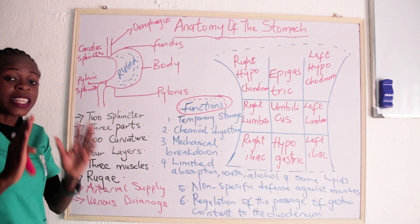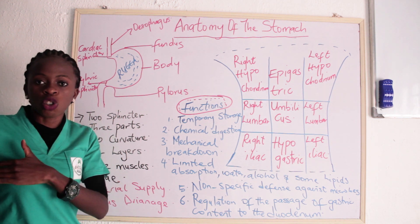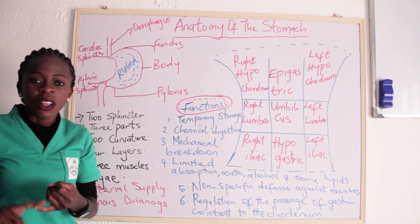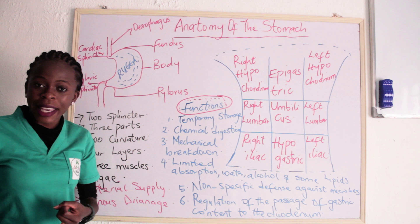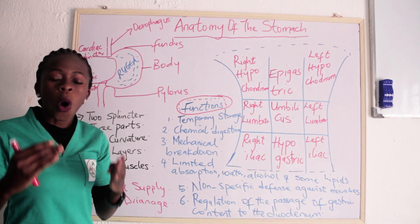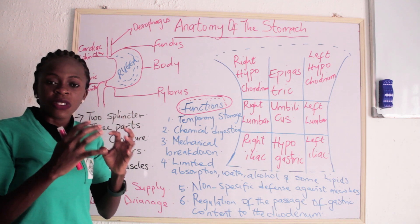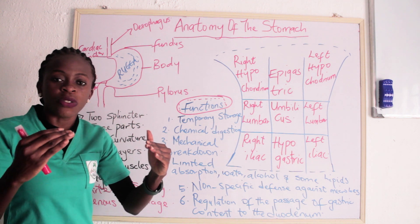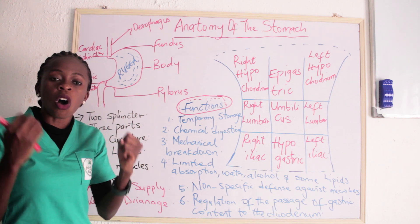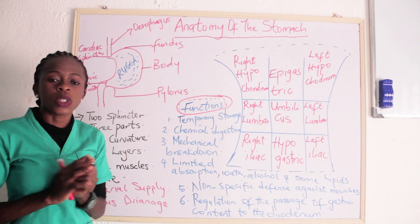The stomach has four layers, just like all other parts of the gastrointestinal tract. We have the mucosa layer, the submucosa layer, the muscularis layer, and the serosal or adventitial layer. The serosal or adventitial is the outer layer, followed by the muscularis layer which consists of muscles, then the submucosa, and finally the mucosa.